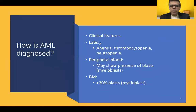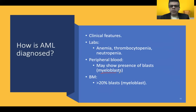Clinical features of AML are the same as general features of acute leukemia. Lab features include anemia, thrombocytopenia, and neutropenia. Peripheral blood shows presence of blasts. If blasts are absent in blood, it is called aleukemic leukemia. If blasts are less than 20% in blood but more than 20% in bone marrow, it is sub-leukemic leukemia. If both blood and bone marrow show more than 20% blasts, it is leukemic leukemia. To be called acute leukemia, you must have more than 20% blasts at least in the bone marrow.